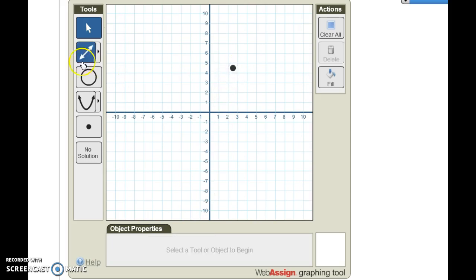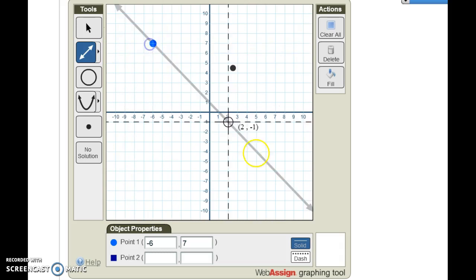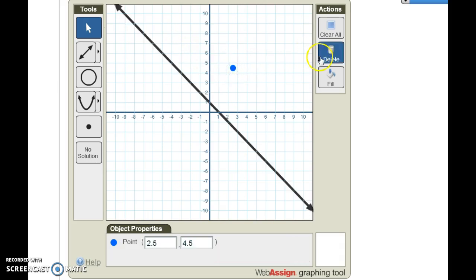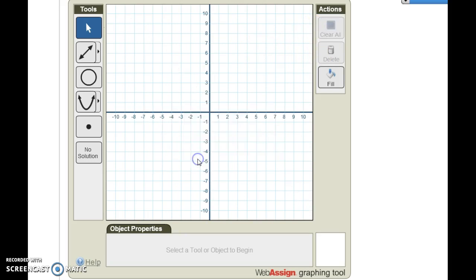Now if I accidentally graphed a point and I wanted to graph a line, don't leave that point there and then graph the line. WebAssign will count it incorrect. Even if you draw the line perfectly, if there's something else on the graph that's not supposed to be there, it'll be counted wrong. So whenever you graph something, if it's not supposed to be there, either click on it and hit delete or you can always start completely over by hitting clear all and it clears the entire chart.